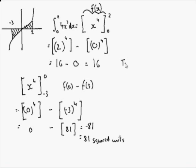Now you've found the separate areas, you've just simply got to do total shaded area equals 16 plus 81 equals 97 square units.